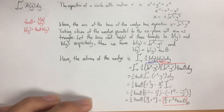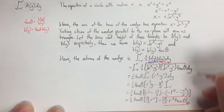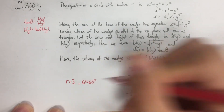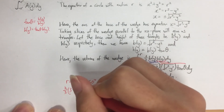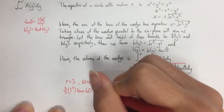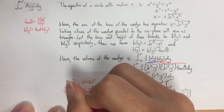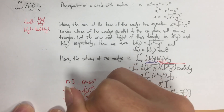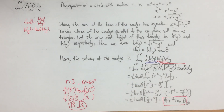The volume of the wedge is (2/3) r³ tan(θ). For the original question paper with r = 3 and θ = 60°, the answer should be (2/3) · 3³ · tan(60°). Since tan(60°) = √3 and 3³ = 27, this gives (2/3) · 27 · √3 = 18√3. So 18√3 is the answer for the original question paper.